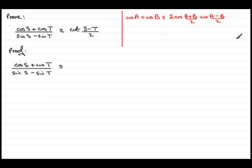So when it comes to simplifying the top, we can write this as 2 cos of s plus t over 2, and the cosine of s minus t over 2, since we have s and t in the place of a and b.